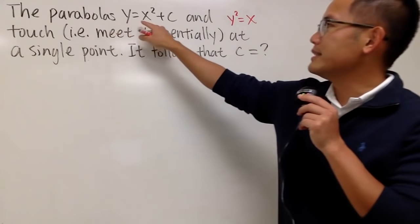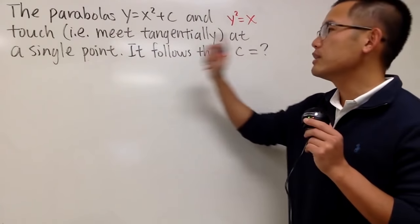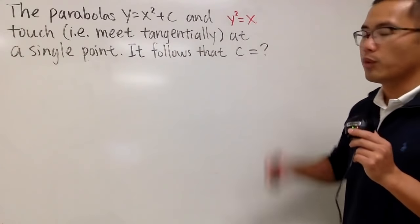It says the parabolas with equations y equals x squared plus c, and y squared equals x, they touch at one single point, and we are going to find out the value for c.